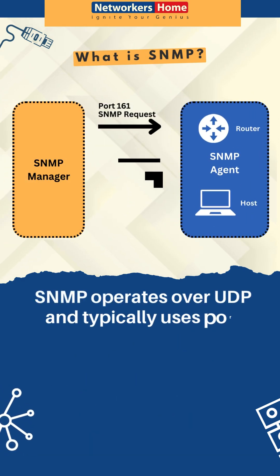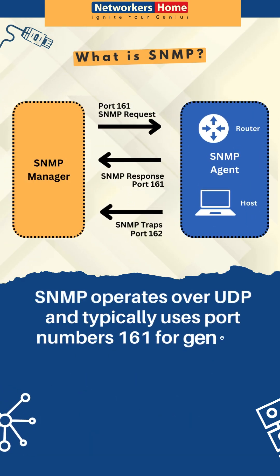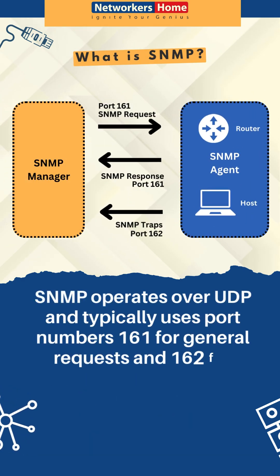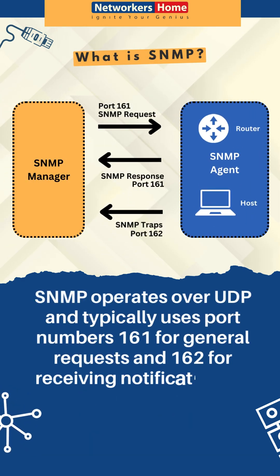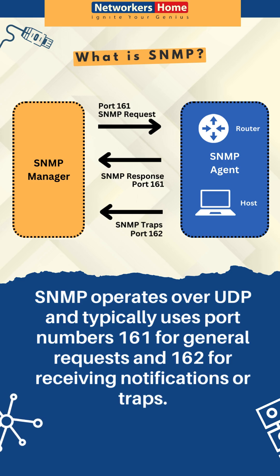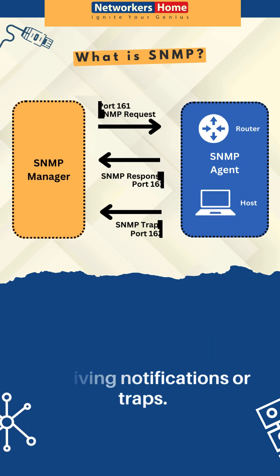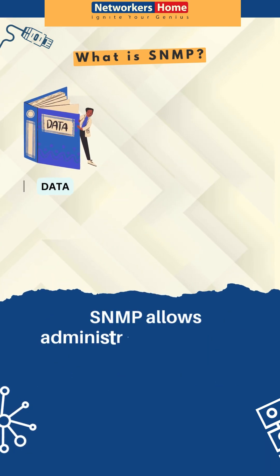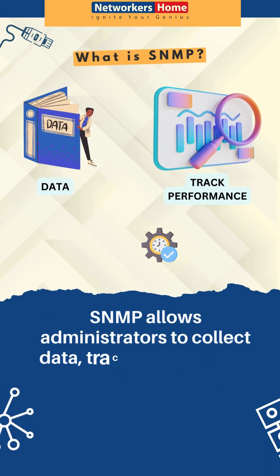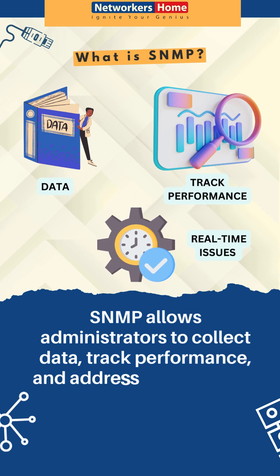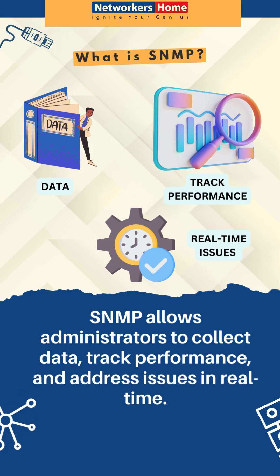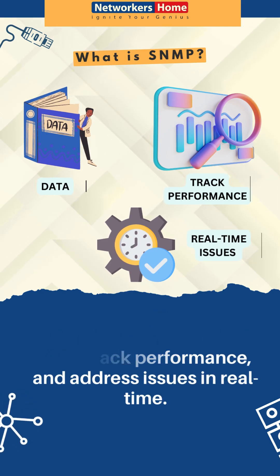SNMP operates over UDP, typically using port number 161 for general requests and 162 for receiving notifications or traps. SNMP allows administrators to collect data, track performance and address issues in real time.